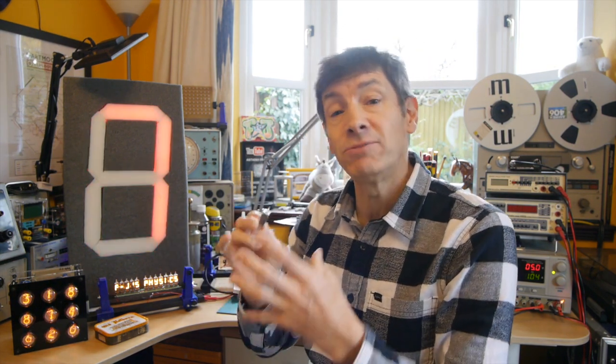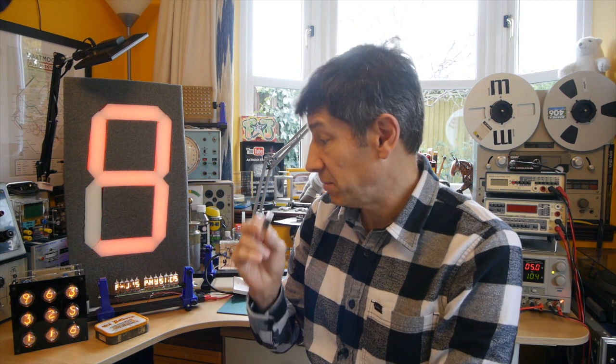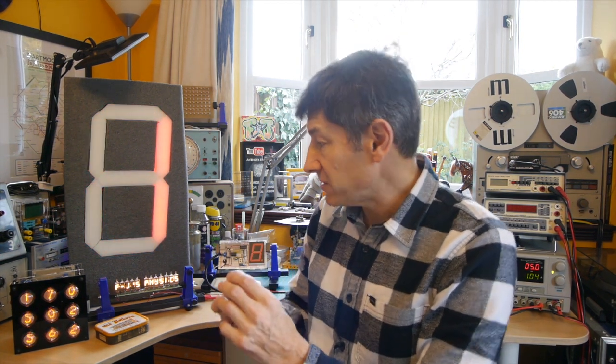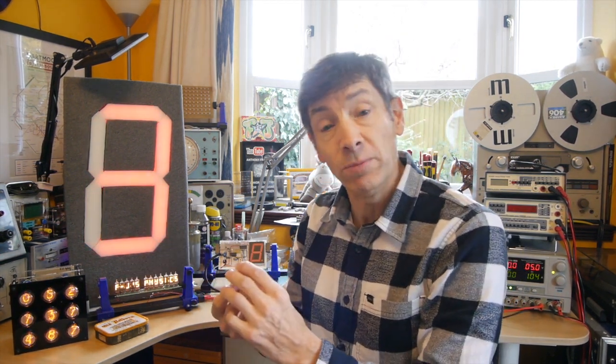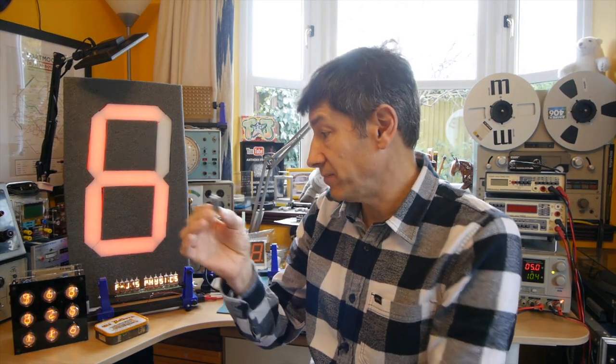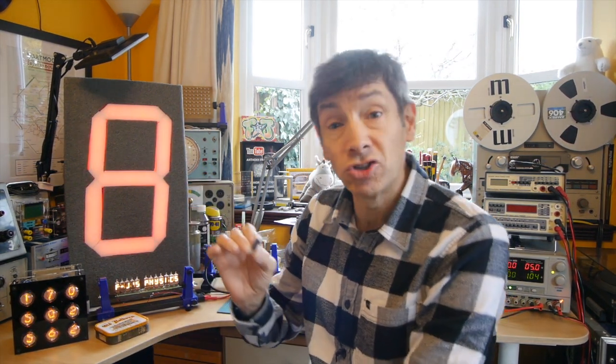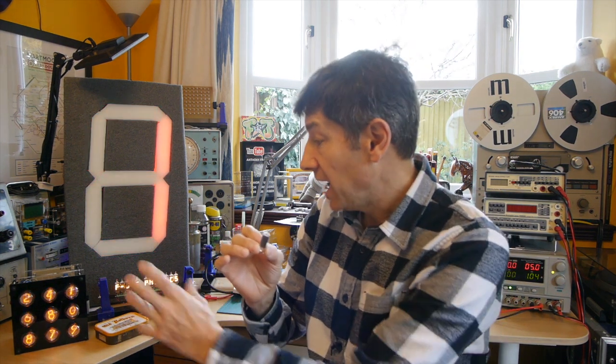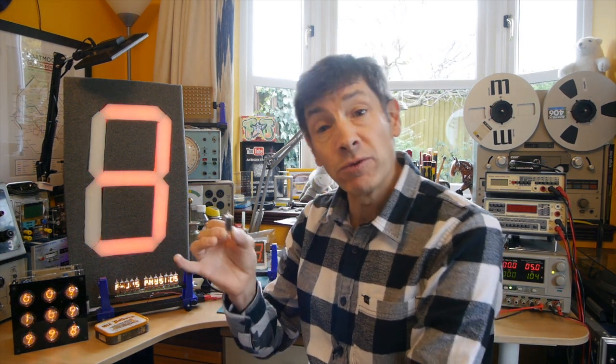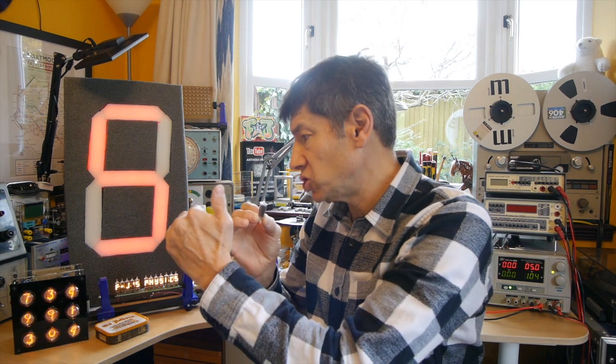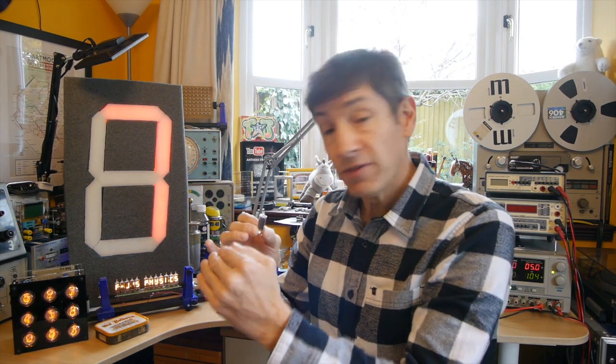But they have some huge advantages over other display types. In comparison to the Nixie tube, these only need about five volts to light up. The Nixie tube needs around 200 or just under 200 to strike. And the other thing with the Nixie tubes is if the voltage drops below a certain level, they just go out.